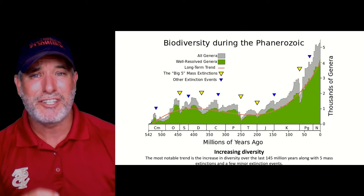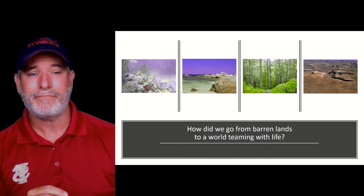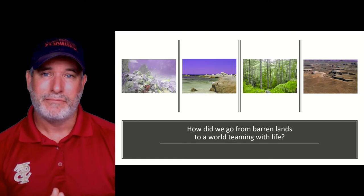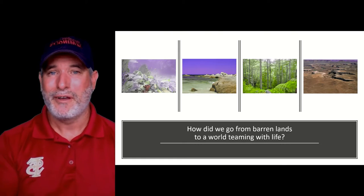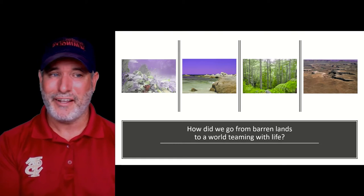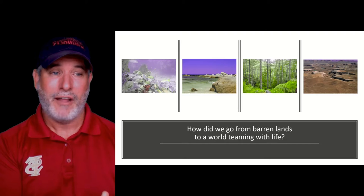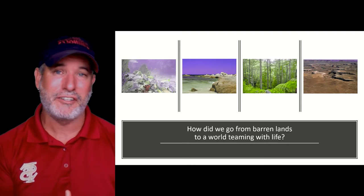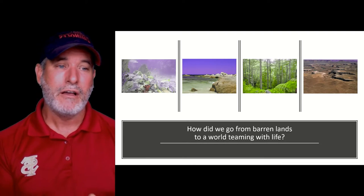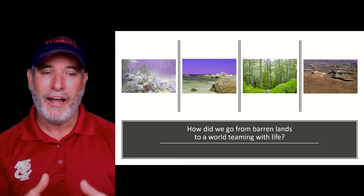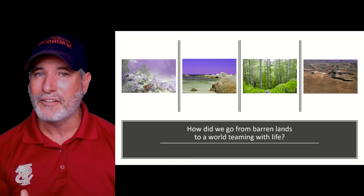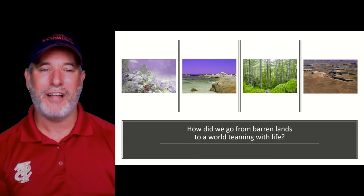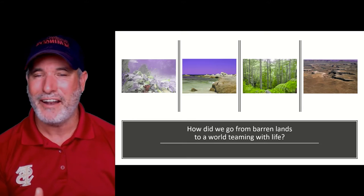Yes, we're in the 6th mass extinction now. So how did the Earth go from a barren landscape to a world teeming with life? How did that happen?